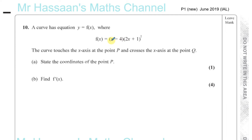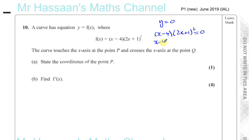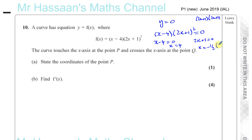We should know that such a curve, which is factorized like this, crosses the x-axis when y is equal to 0. When y equals 0, you have x minus 4 times 2x plus 1 squared equals 0. So either x minus 4 is 0, in which case x is equal to 4, or 2x plus 1 is equal to 0, in which case x is equal to minus a half. Because this is a repeated factor, it's minus a half twice, because you end up with 2x plus 1 times 2x plus 1.